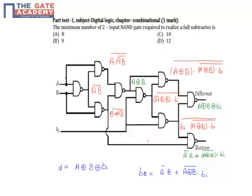So from this circuit we can see that there are in all 1, 2, 3, 4, 5, 6, 7, 8 and 9, 9 gates.